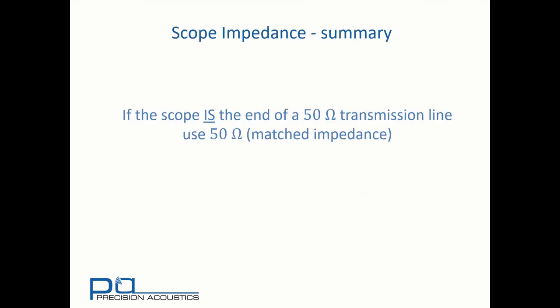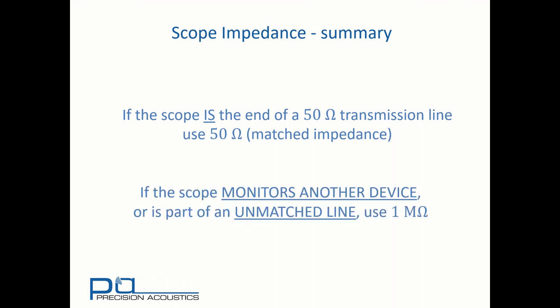To summarize: if the scope is at the end of a 50 ohm transmission line, then you must use 50 ohm impedance to ensure that you have a matched impedance. If the oscilloscope monitors another device, or is part of an unmatched line using an unbuffered hydrophone, you must use one megaohm impedance. We hope you found this interesting — come back and find some more of the Precision Acoustics tutorial videos. We'll see you next time.